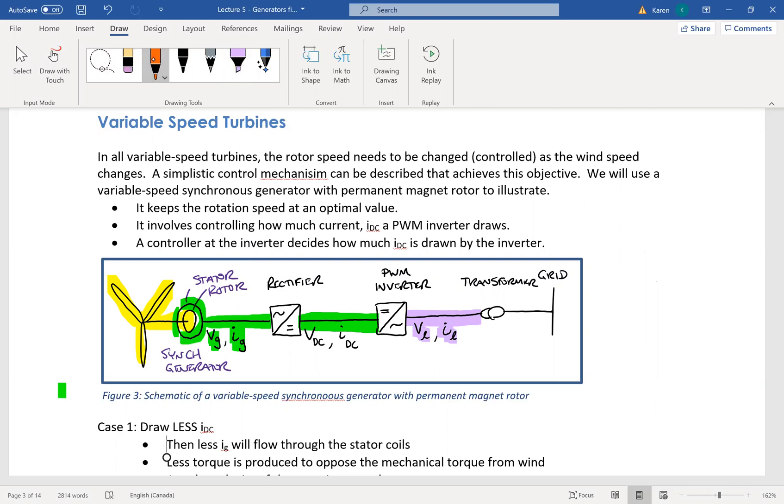And what I want to make note of here is that in this variable speed synchronous generator situation, it's a pulse width modulator inverter that actually does the control. So this is where the control happens and what it is controlling is it controls the DC current. So this is controlling your DC current.